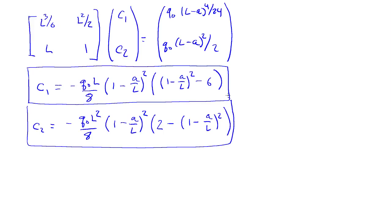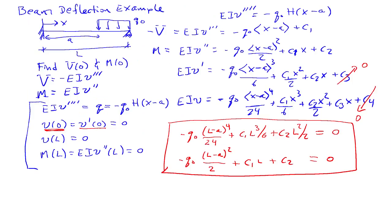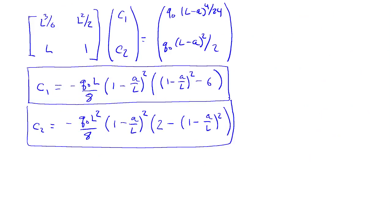And recall what the original question was: find the support reactions over here, so that's V0, M0. So if we look over at the equations on the right-hand side over here, if we'd like to know what V0 is, we see that V0 is equal to minus C1. And we also see that M0 is equal to C2. So I actually have the answer that I'm looking for here: this is minus V0, and this is M0.